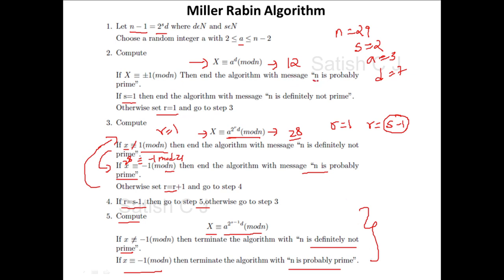We demonstrated the algorithm with three different examples to cover every branch. For the first branch we took n = 7 and concluded probably prime. For the second branch we took n = 15, arrived at X not congruent to ±1 mod n with s = 1, and said definitely not prime. For the third branch we took n = 29, s ≠ 1, ran the loop, and concluded probably prime.